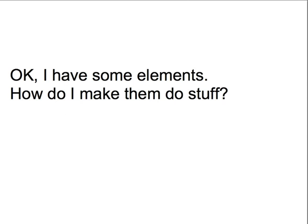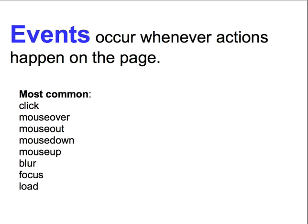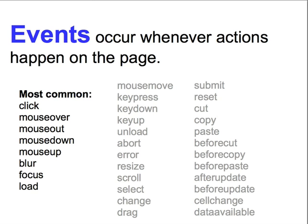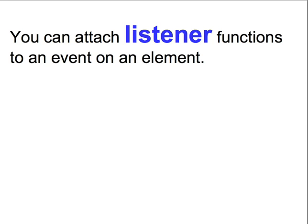So, we know how to get references to DOM nodes using get methods and node properties. The main thing that we'll want to do is to attach events. An event is something that occurs whenever an action happens on the page. These are some of the common events you'll likely want to use: there are events when elements are clicked, when the mouse moves over or out of an element, when the mouse button is depressed or released, and for form elements, there are events when the elements lose or gain focus. And for the entire page, there's an event when the page has finished loading.